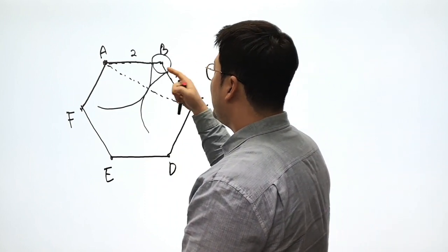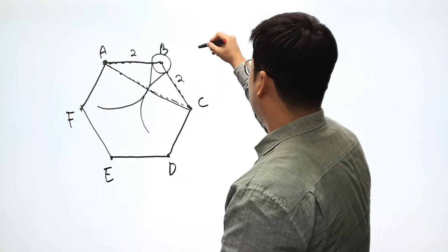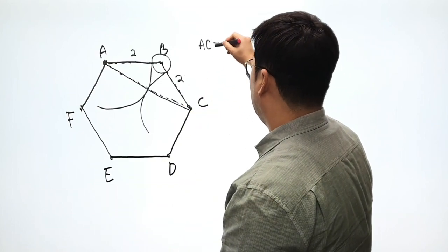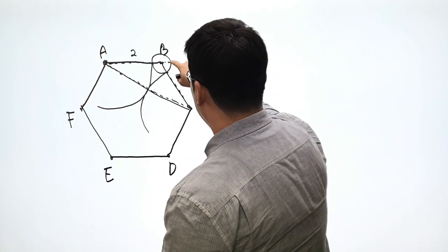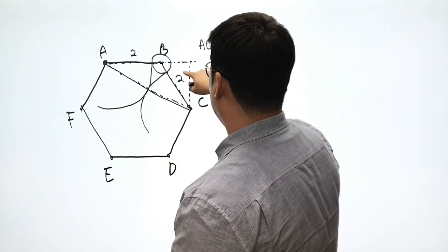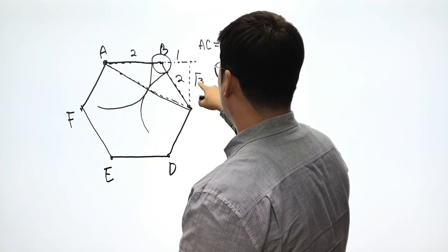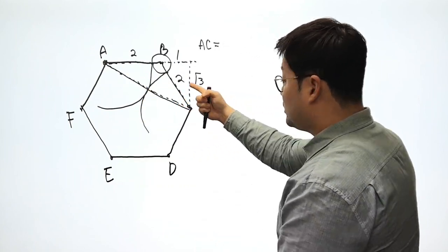Okay. So what do I know about this AC? Well, I think we can actually get AC using law of cosines, or you can use Pythagoras. If I extend this AB all the way onto that level, and that becomes, you know, like one and rad three, or you can actually get AC using just law of cosines.